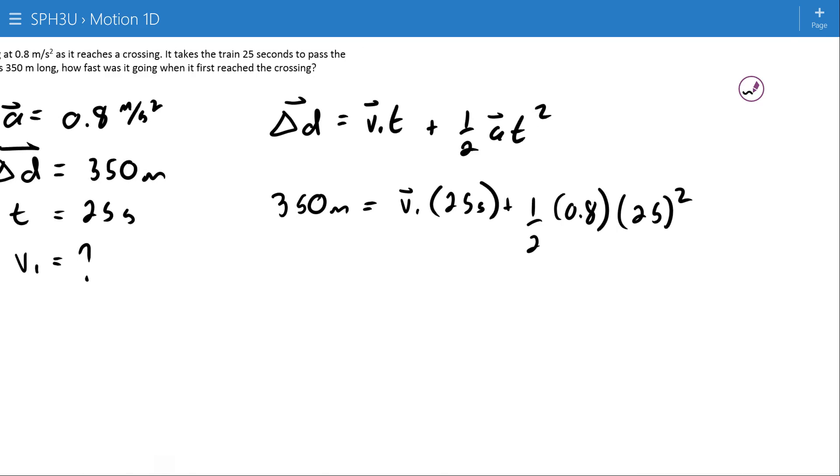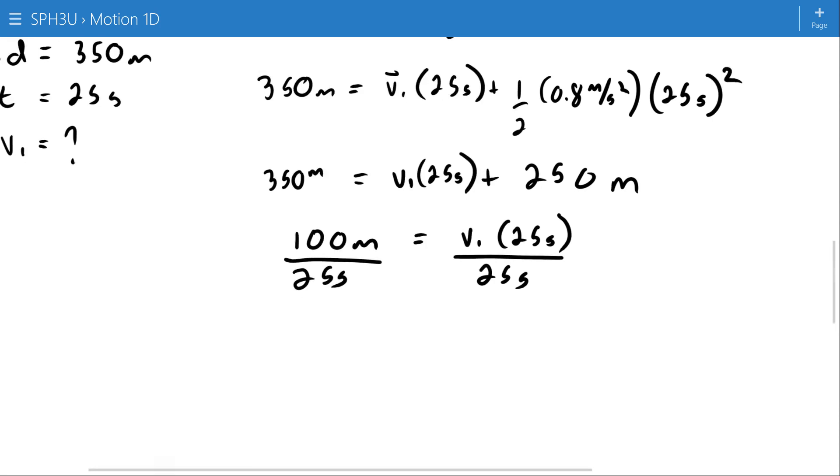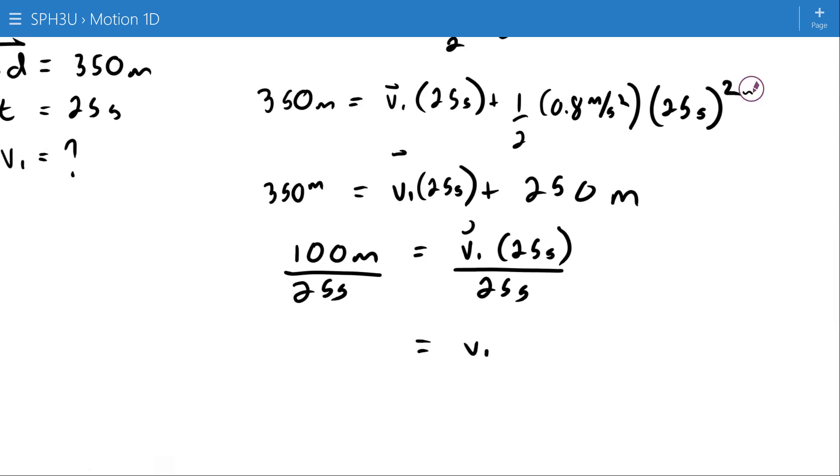So the first thing I'm going to do is look at that very last term and just collapse it down to just one value, so it's a little easier to work with. So that all is equal to 250. I'm getting lazy with my units again. This is in meters per second squared, and this is in seconds that will become squared, and so what I'm left with here is meters. 350 minus 250 is just going to be 100 meters. V1 times 25 seconds. If I divide both sides by 25 seconds, then my V1 is equal to four meters per second.